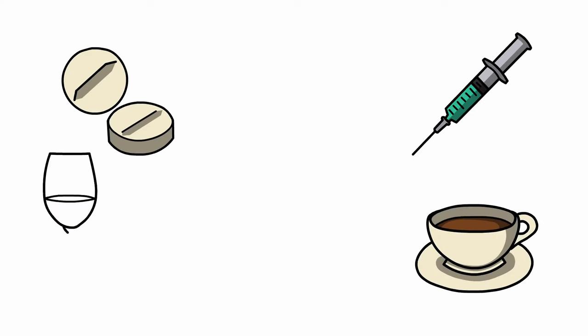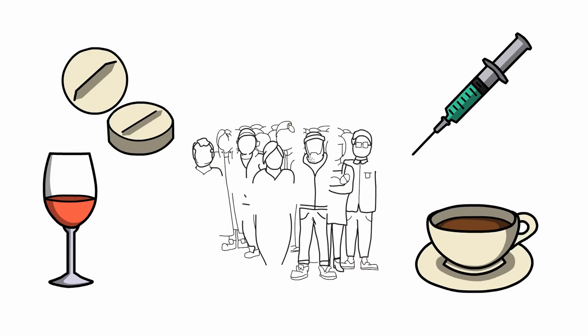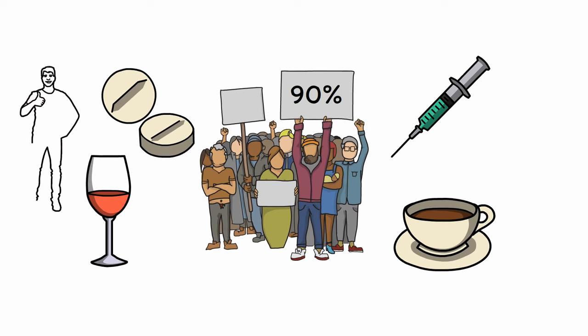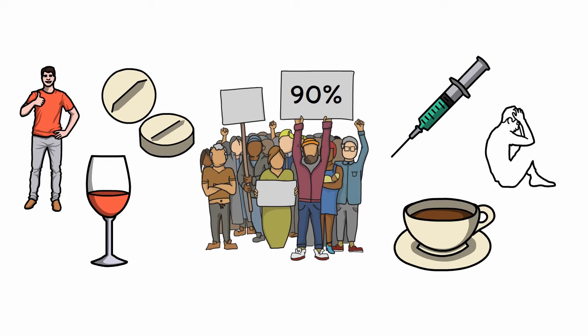Who uses drugs? Just about everybody. Use of psychoactive substances is incredibly common, with over 90% of people in the United States taking at least one on a regular basis. While many people are able to use psychoactive substances without negative effects on their health, a significant minority of people will develop problems as a result of substance use.